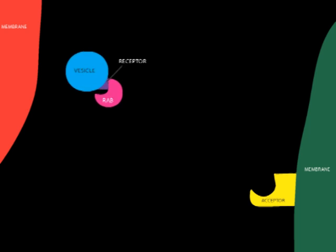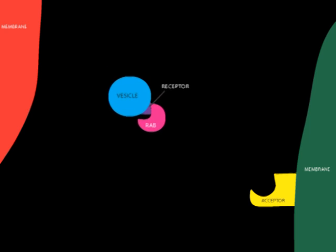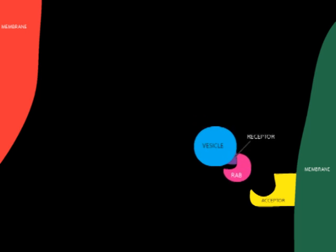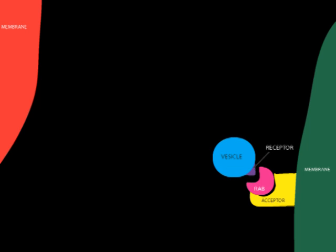Once bound, the RAB protein can direct the vesicle to a new location in the cell. The RAB protein is then met by an acceptor protein that is on a different membrane. If it is the right acceptor, the RAB protein will bind allowing the vesicle to fuse with the new membrane.